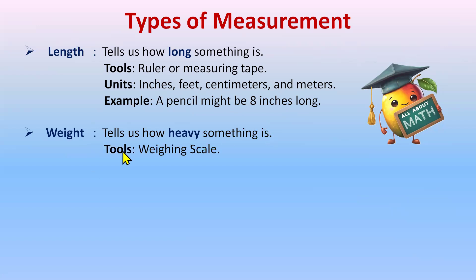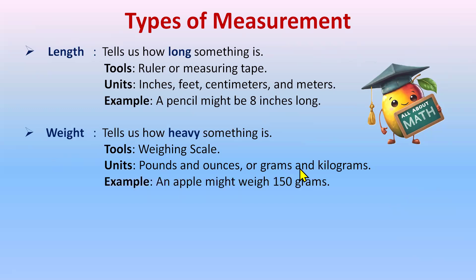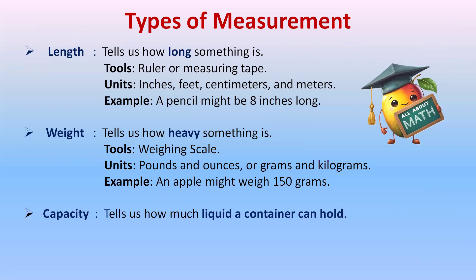The tools to measure weight are the weighing scale or weighing machines. The units we use for weight are pounds, ounces, grams, and kilograms. For example, an apple might weigh 150 grams.